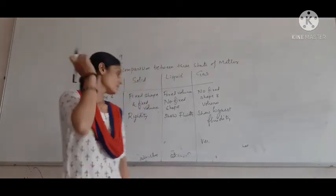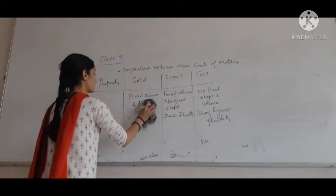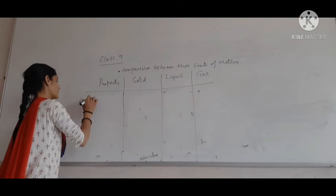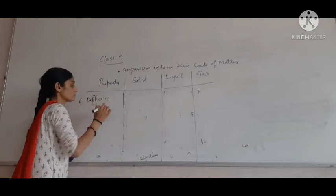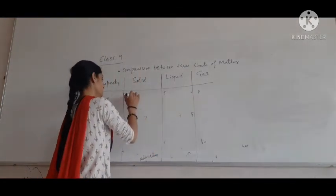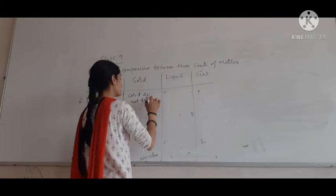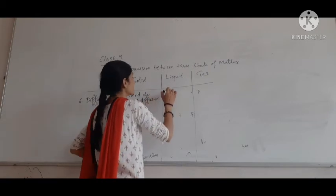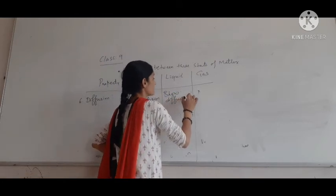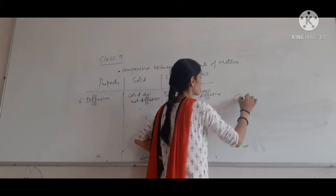Now we learn about a new property we have already studied — diffusion. Diffusion is the intermixing of the particles of one substance with another substance by itself. Solids do not show diffusion. Liquids show diffusion. Gases also show diffusion, and when we compare all three, gas shows the highest diffusion.